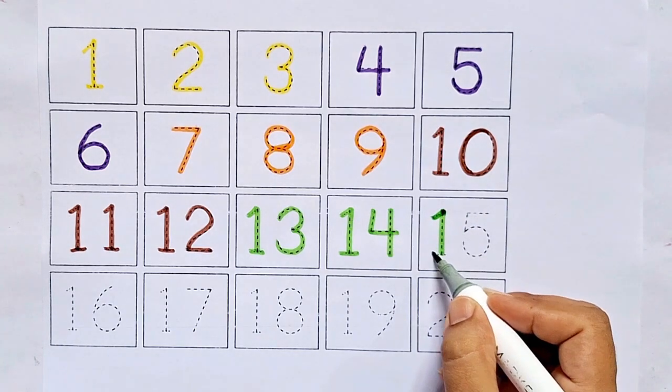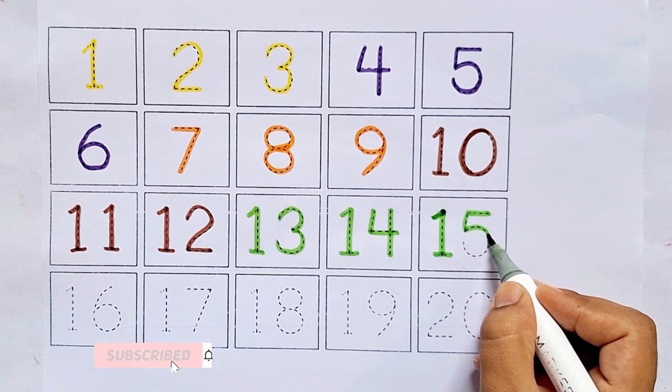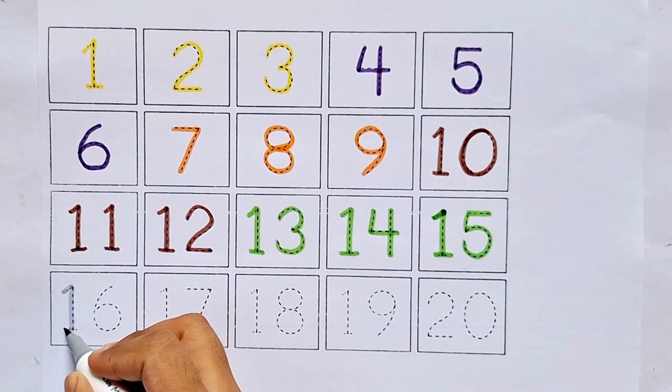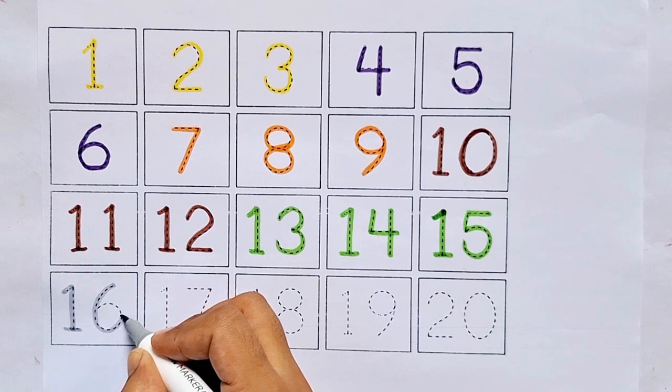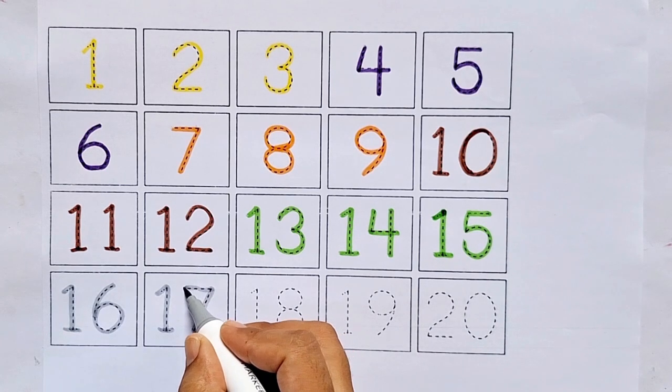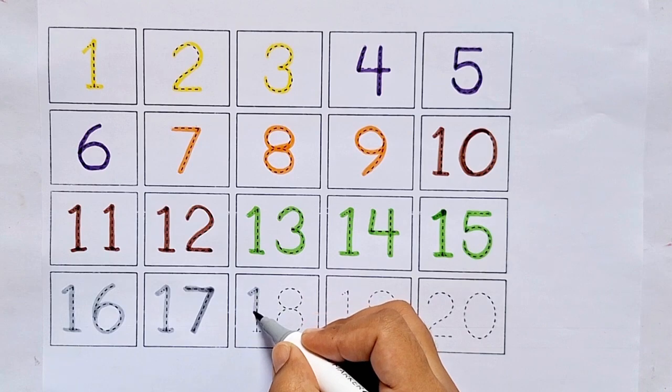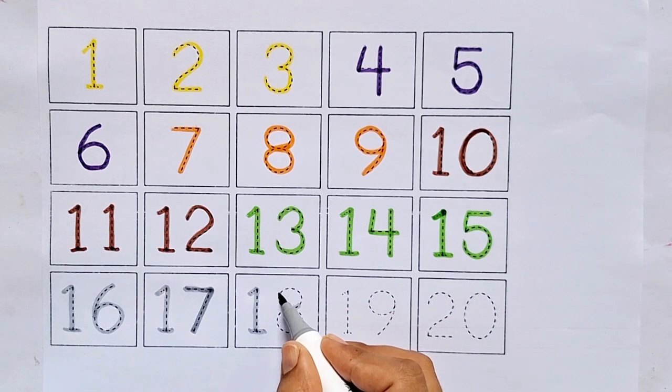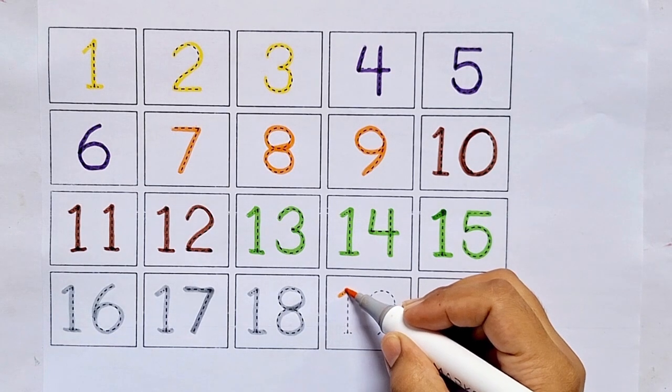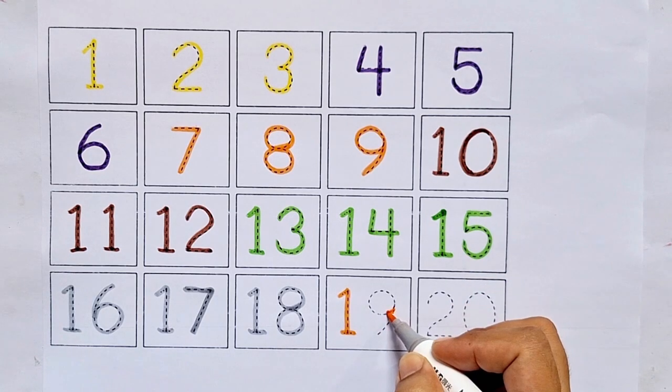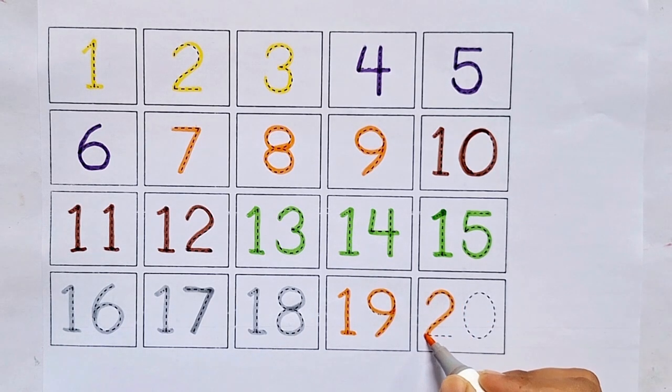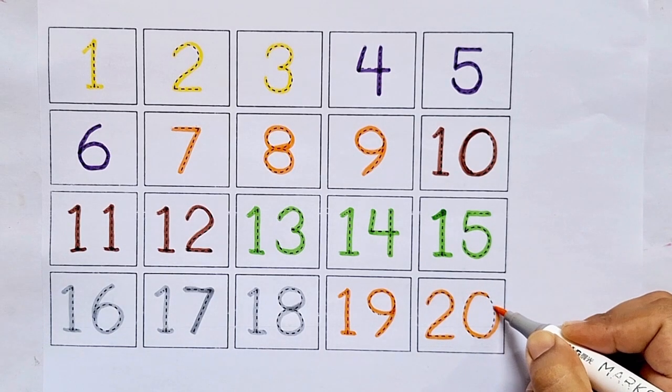Fifteen. One, five, fifteen. After fourteen comes fifteen. Sixteen, seventeen, eighteen. Nineteen. One, nine, nineteen. After eighteen comes nineteen. Twenty. Two, zero, twenty. After nineteen comes twenty.